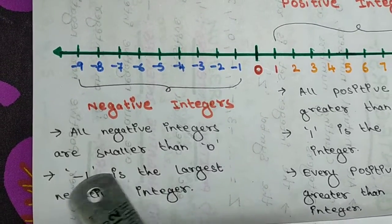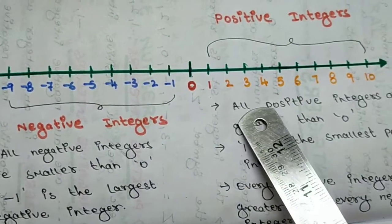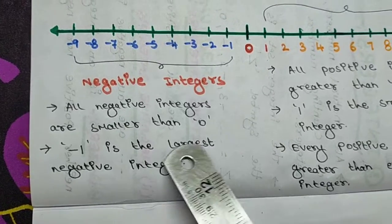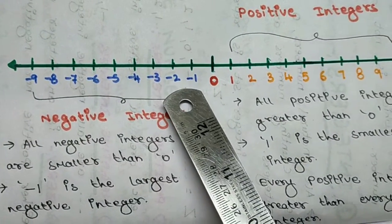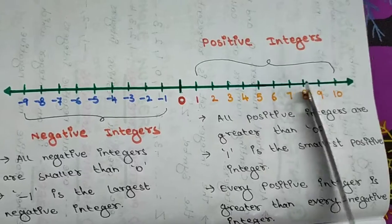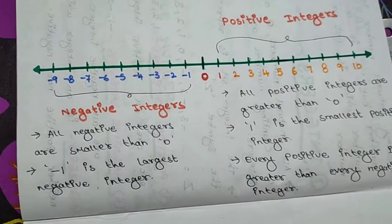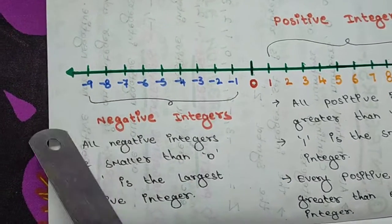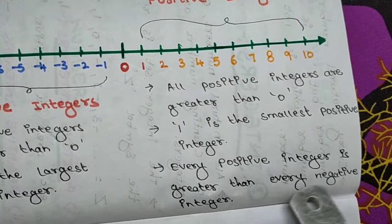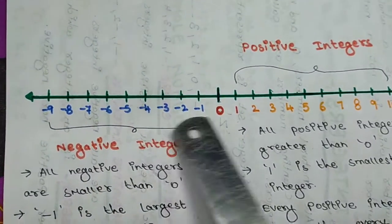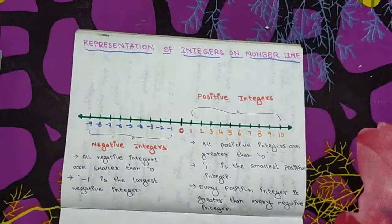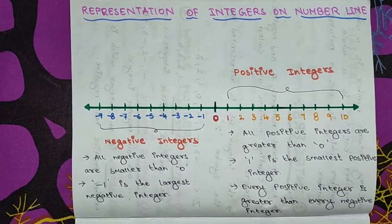All the negative integers are smaller than zero. All the positive integers are bigger than zero. Minus 1 is the largest negative integer. As you go further into the negative side, the value keeps decreasing. On the positive side, as you go further, the value keeps increasing. Every positive integer is greater than every negative integer — for example, plus 1 is greater than minus 1, plus 2 is greater than minus 2, plus 3 is greater than minus 3. This is the representation of integers on a number line.